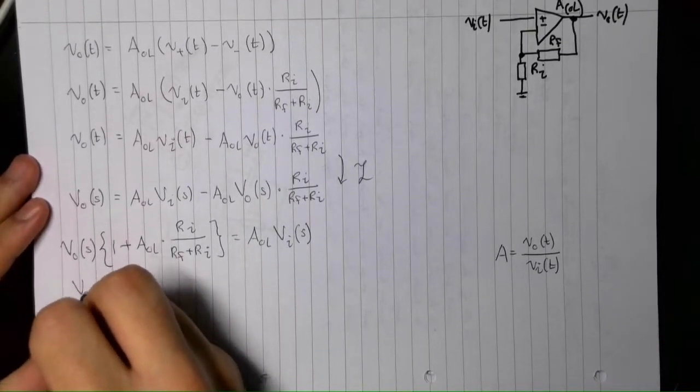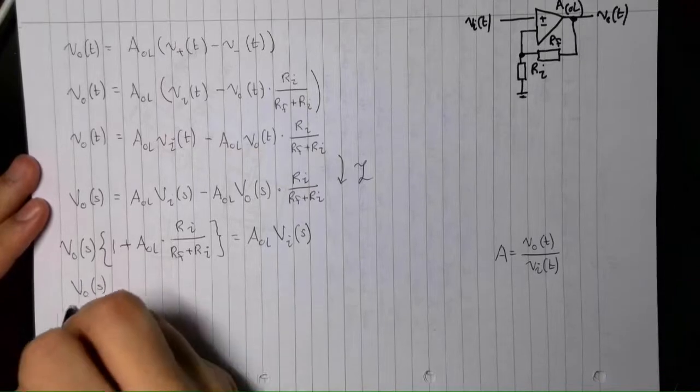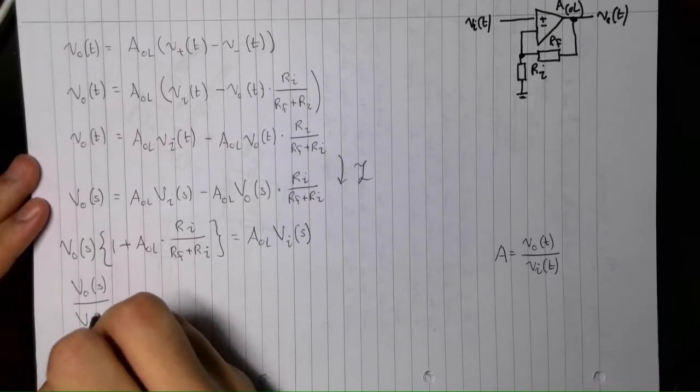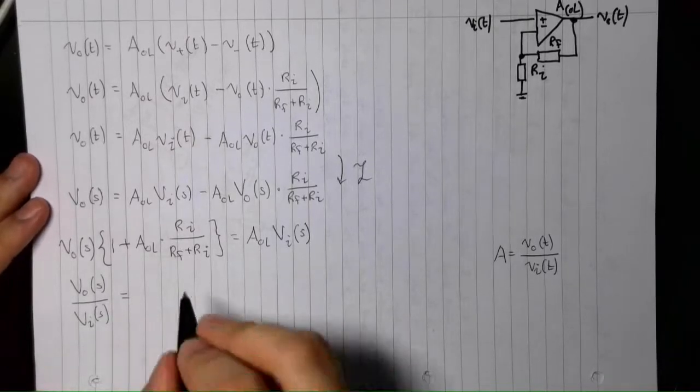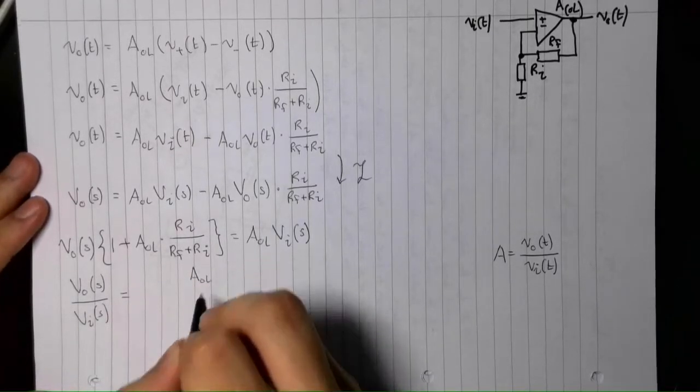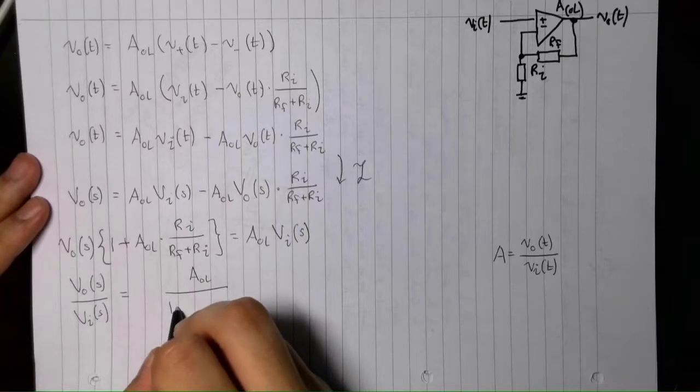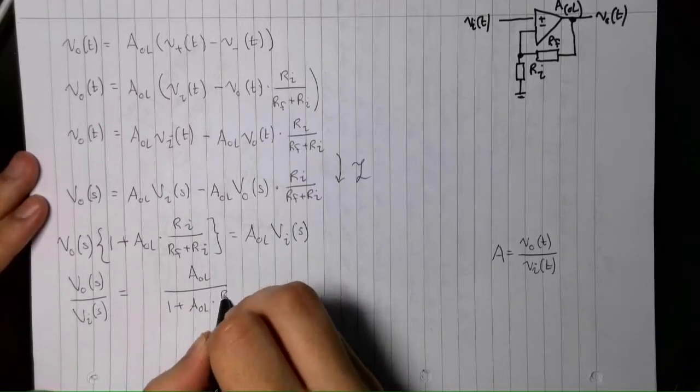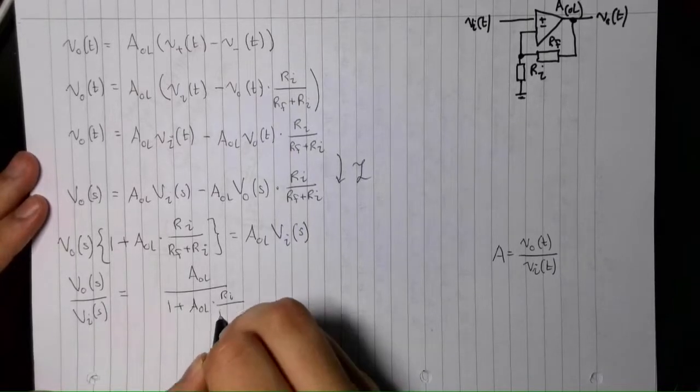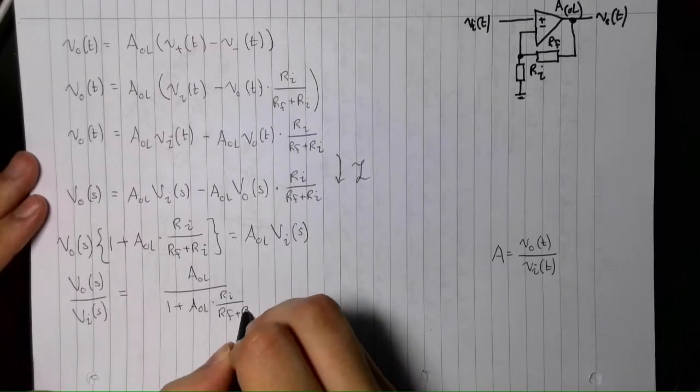So, we have the output voltage over the input voltage. And over this side, we just have the open loop gain divided by this lump here, one plus the open loop gain multiplied by RI over RF plus RI.